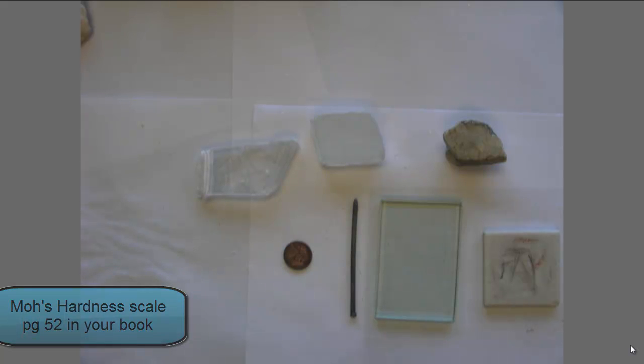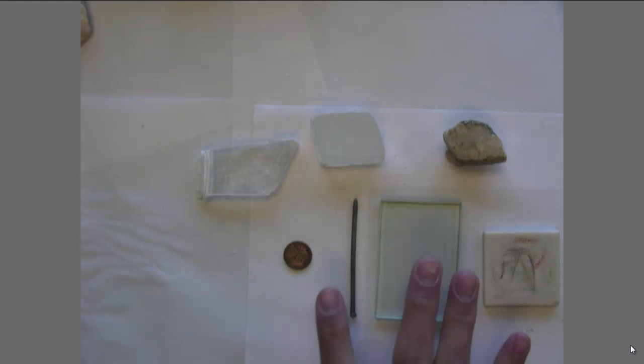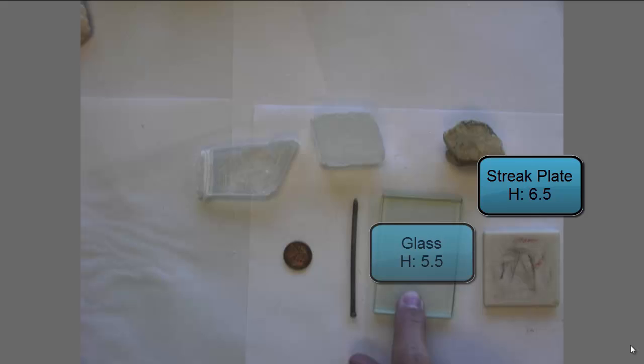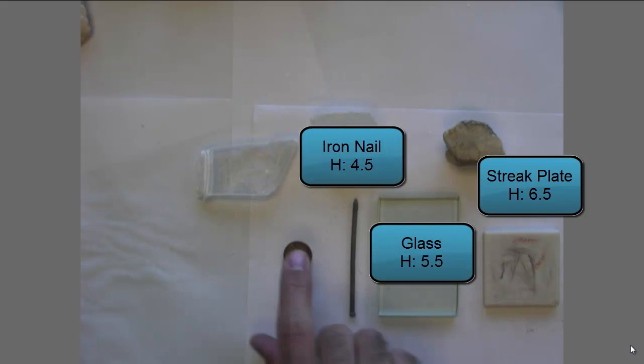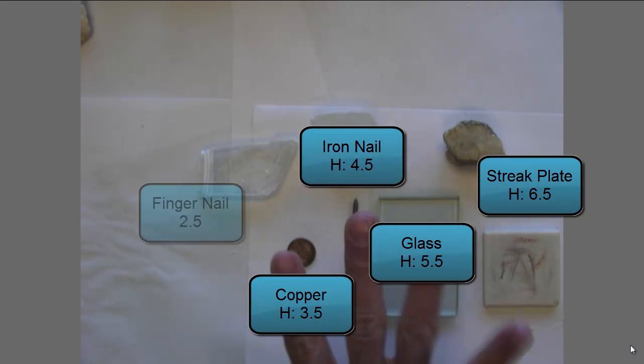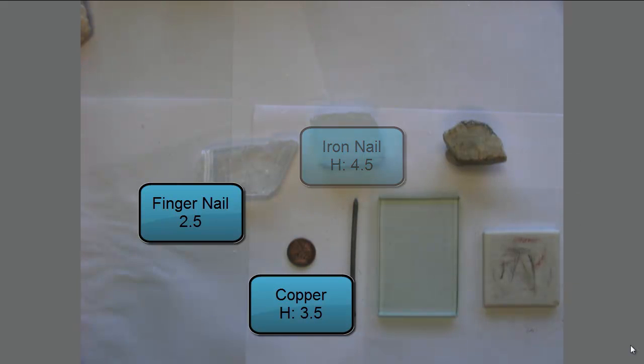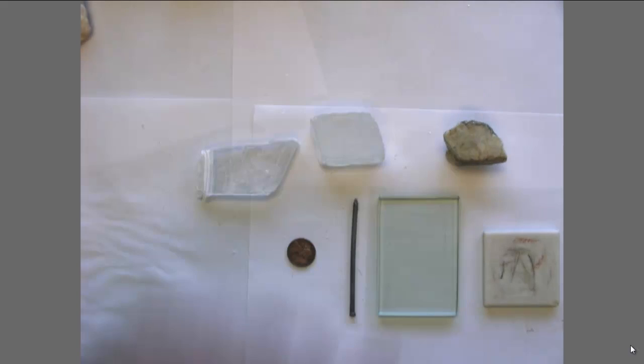But really, what we're going to be doing is not scratching these minerals against other minerals, but against these objects right here. A streak plate, a glass plate, an iron nail, a copper penny, and your fingernails. All of those have a given hardness value that you can compare these minerals to.